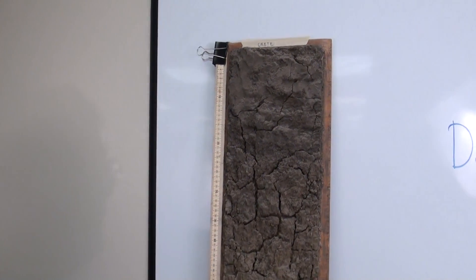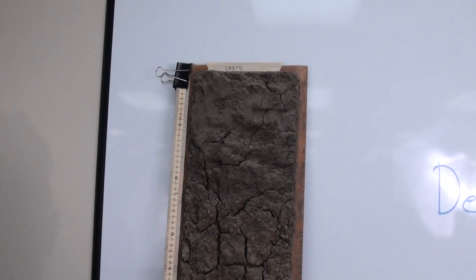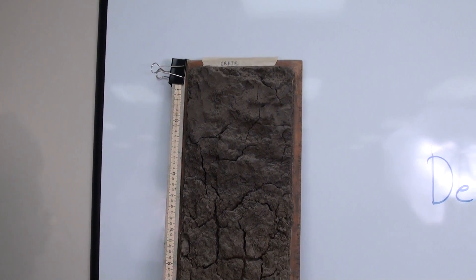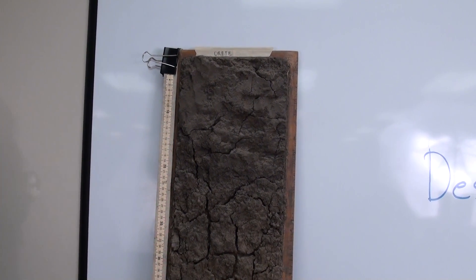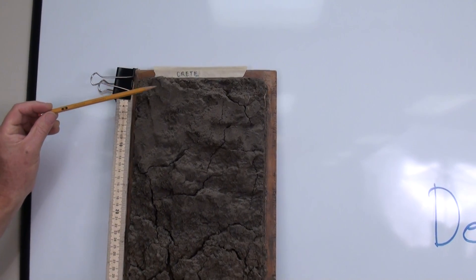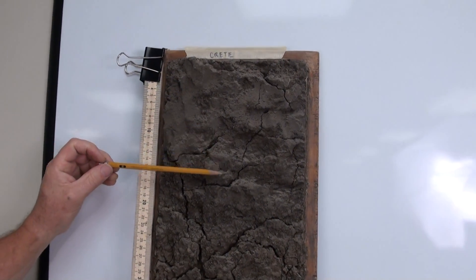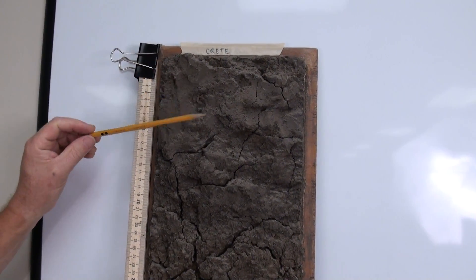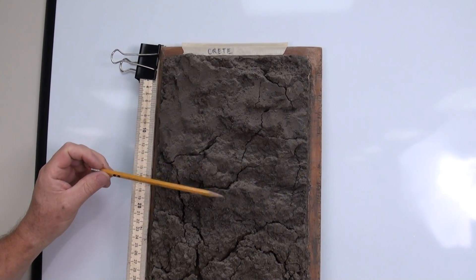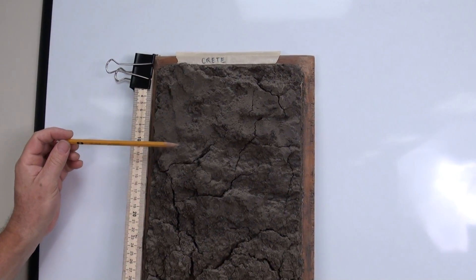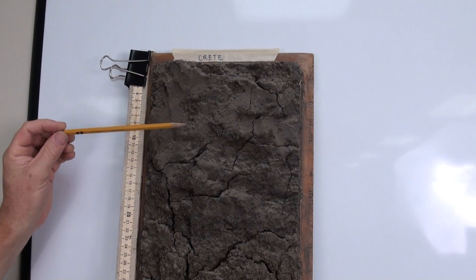This is a soil monolith, an intact soil face preserved on a wooden board. We can see up here near the top that normally we would expect a lot of roots and organic materials and maybe a crumbly granular structure. Not the case in this Crete soil.